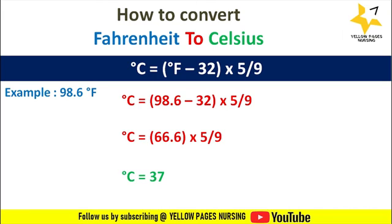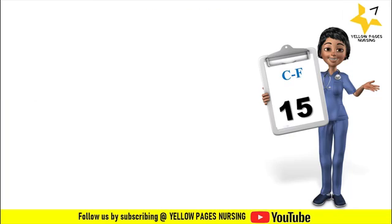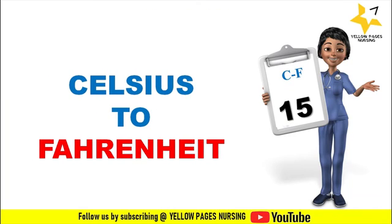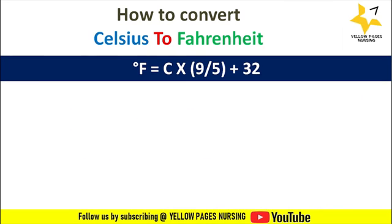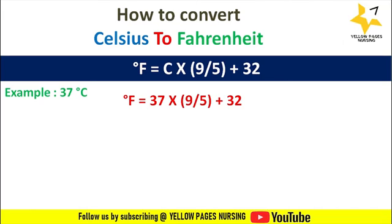Next comes conversion of Celsius to Fahrenheit. The formula is: Fahrenheit = (Celsius × 9/5) + 32. For example, temperature is 37°C. Fahrenheit = (37 × 9/5) + 32, and the answer is 98.6. Hence the temperature will be 98.6°F.